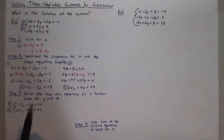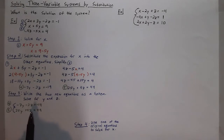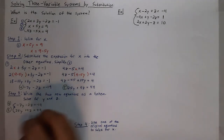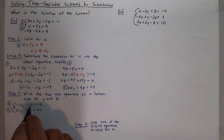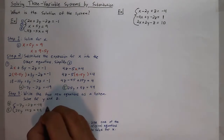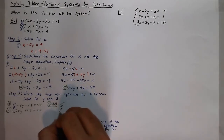It doesn't make sense to continue using substitution here, since solving for any one of these variables would yield a fraction and make the math more difficult than it needs to be. We have elimination as a choice. So I'm going to take the fourth equation and multiply by 2, so I get negative 4z, which will cancel with the positive 4z to eliminate the z variable. Equation 4 times 2, keep equation 5 the same.